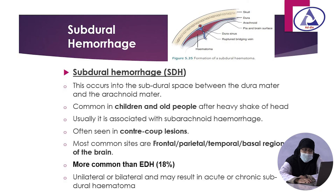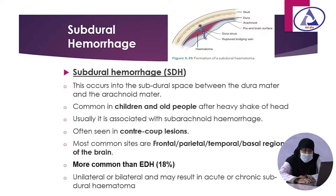Subdural hemorrhage occurs when hemorrhage occurs in the subdural space between the dura and arachnoid matter. It is common in children and older age due to heavy shaking of the head. In children, it is commonly seen in shaken baby syndrome. It is usually seen contrecoup, associated with subarachnoid hemorrhage.